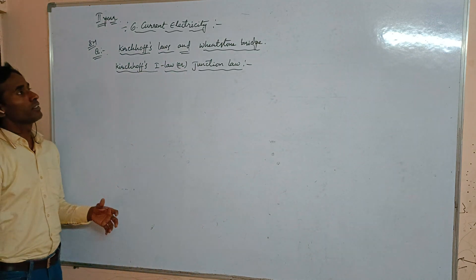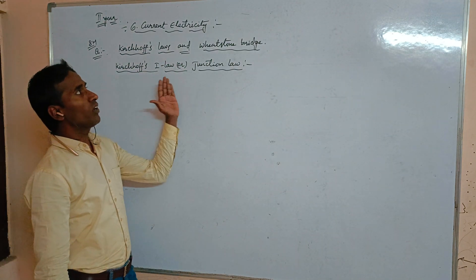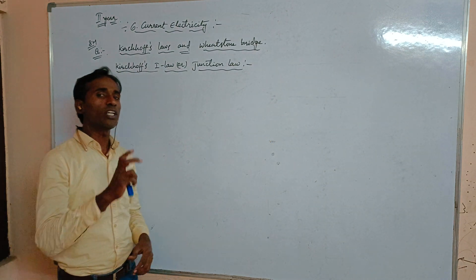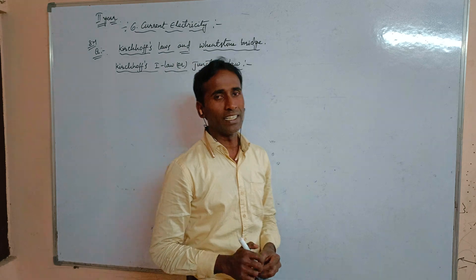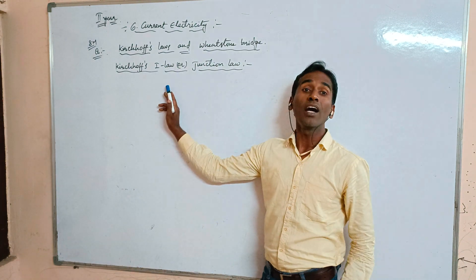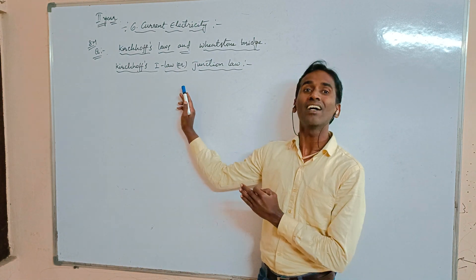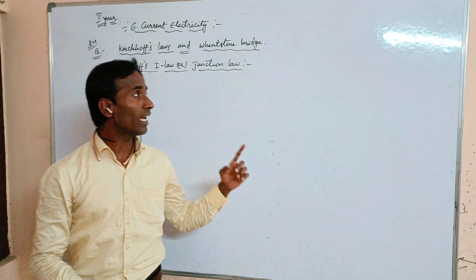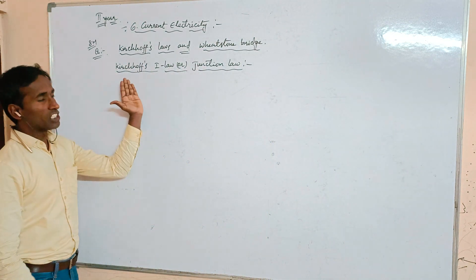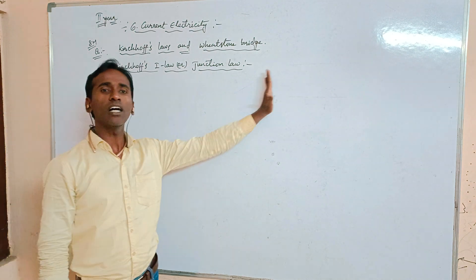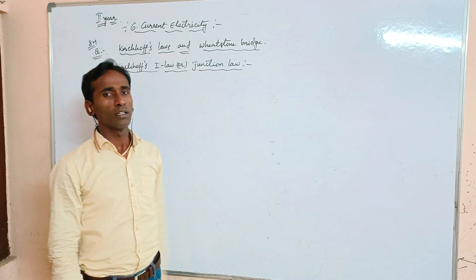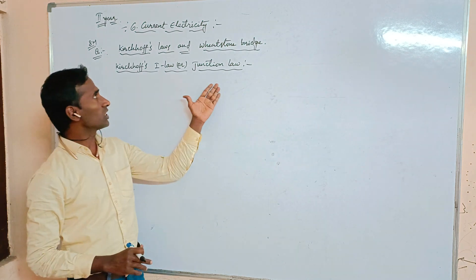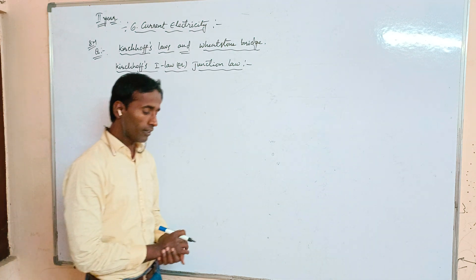Kirchhoff's Laws consist of two types. The first one is Kirchhoff's First Law, which is also called the Junction Law or the Current Law. This one law has three names: Kirchhoff's First Law, Junction Law, and Current Law.